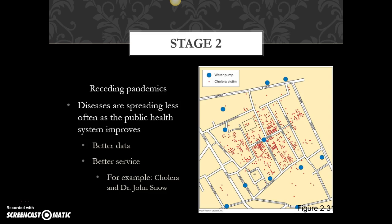That includes things like making sure you've got a clean source of water and making sure that trash and waste products don't wind up in the street. One of the ways countries in stage two are cleaning up their act is through the increasing use of data. This is actually a huge subfield of geography — medical geography — where you track cases of a given illness, plot them on a map, and trace back to either the originator or source of the illness, or track which way an illness is moving.